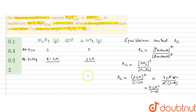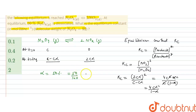Now alpha is given in the question — 50 percent is dissociated, so alpha = 50/100 = 0.5. We also need the concentration c, which can be calculated next.